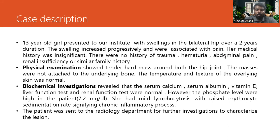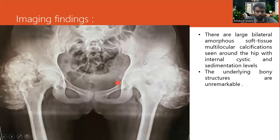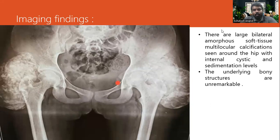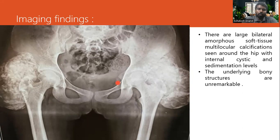The patient was then sent to the radiology department for further investigation. The first investigation that we did was an X-ray, which revealed large bilateral amorphous soft tissue multi-locular calcification seen around the hip with internal cystic and sedimentation level. The underlying bone structures were in fact unremarkable.